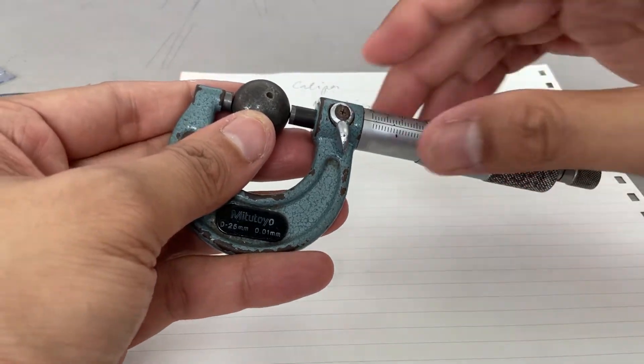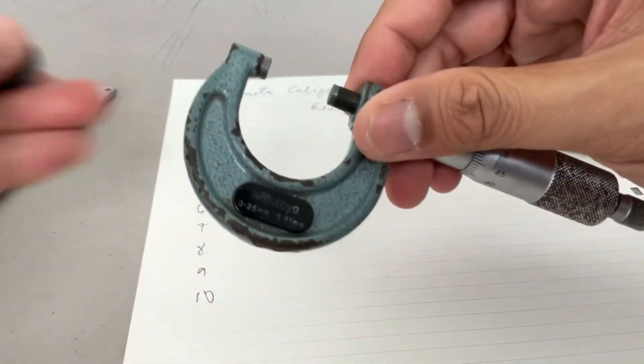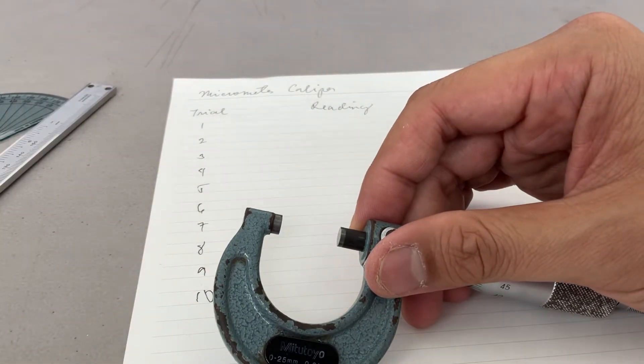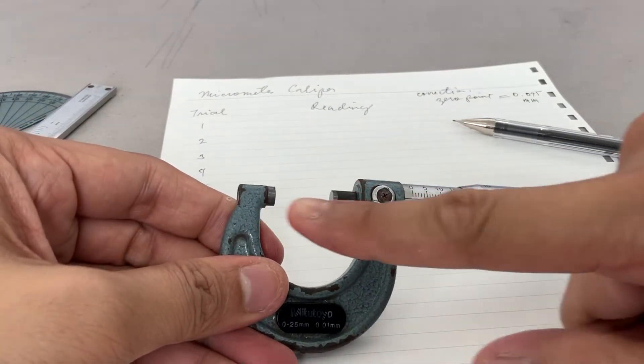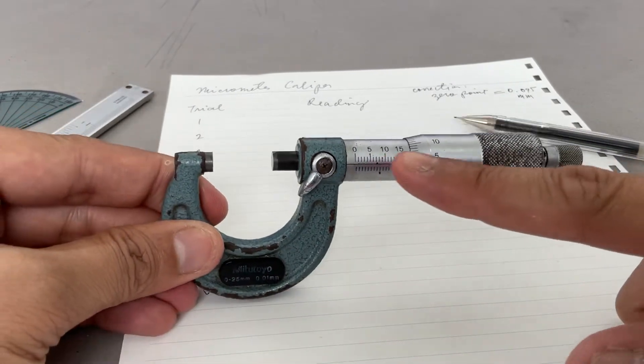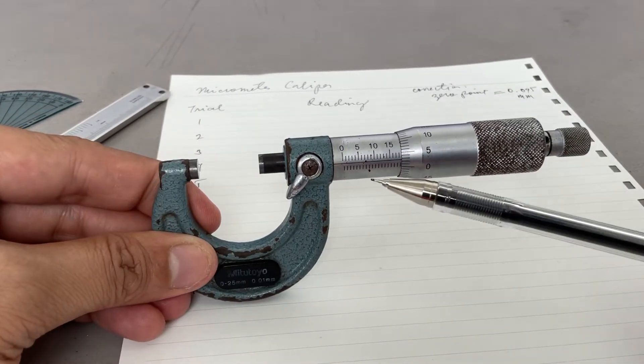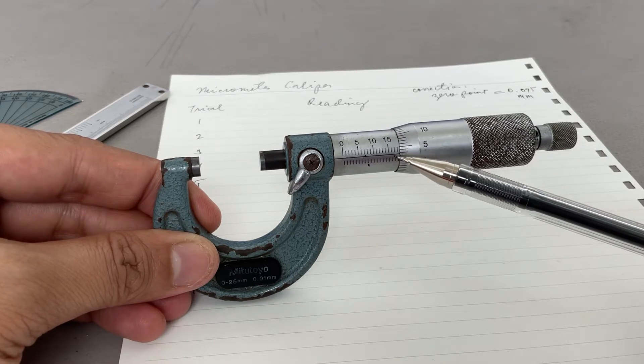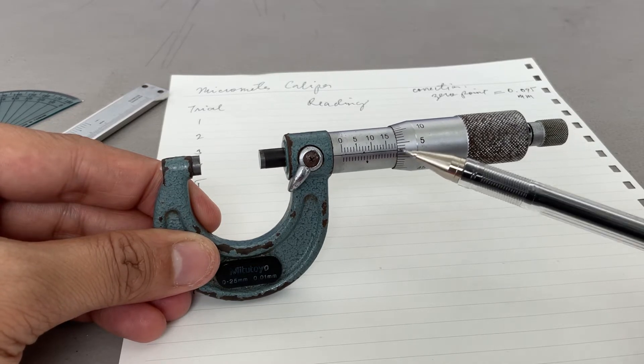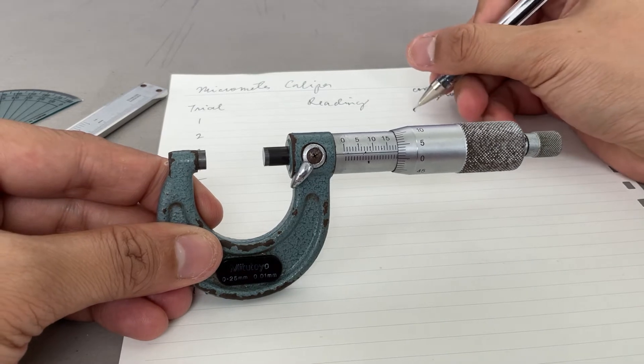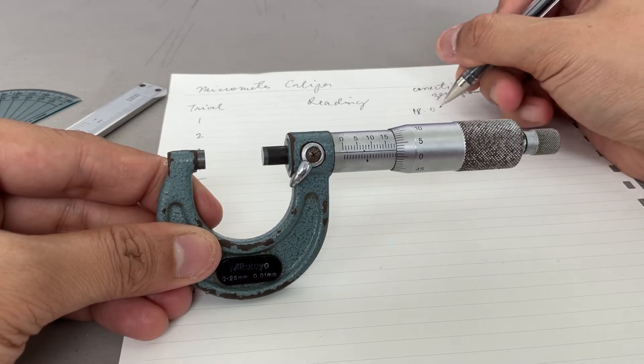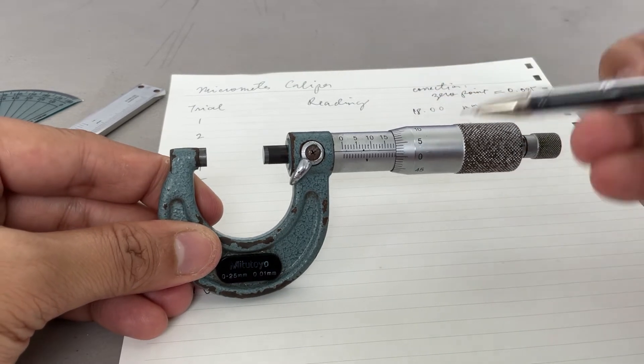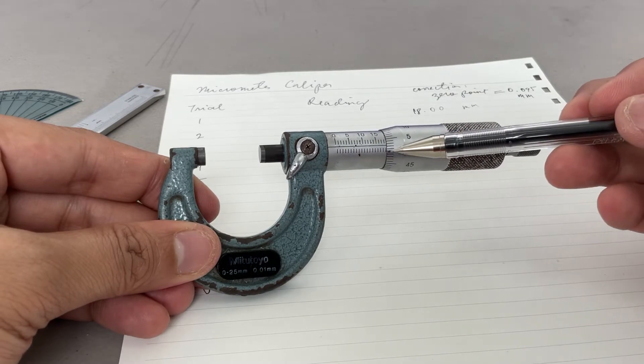You can lock it. How do you measure this? Look at the main scale - it's 16, 17, 18. For trial one it's 18.00 millimeters, and then it passes by the half mark so it's 0.5.